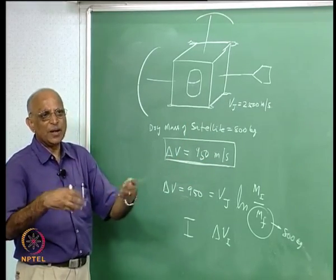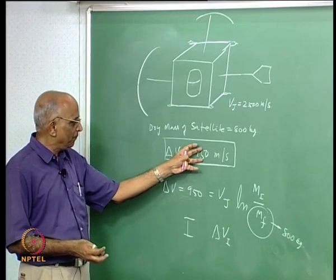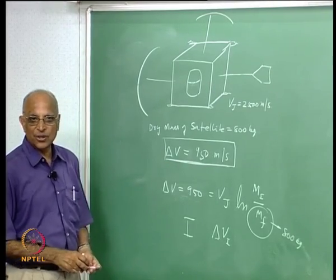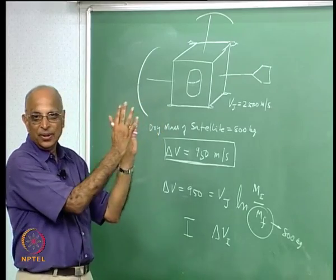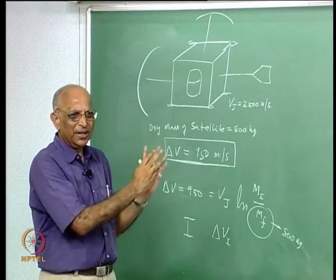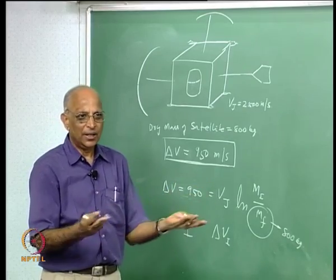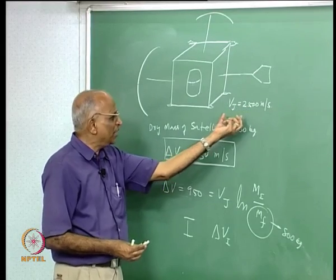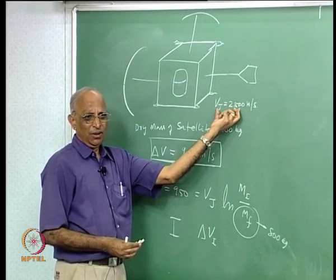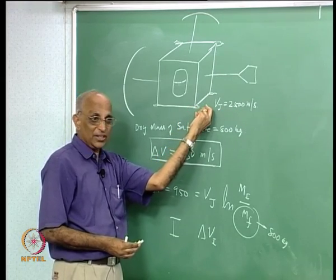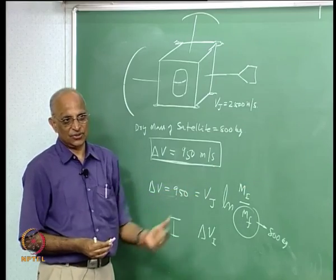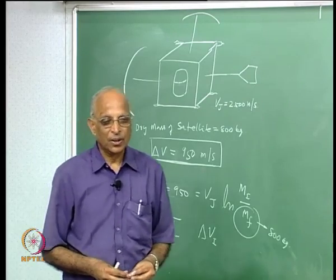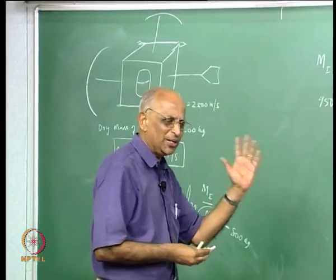These two examples illustrate the theory of rocket propulsion. For assignments, more problems will be given. I think we must be fairly clear about the theory of propulsion — once we are, it is straightforward. In the next part of this class, we will try to see how we get a high jet velocity in a rocket. Let us summarize once again before proceeding.